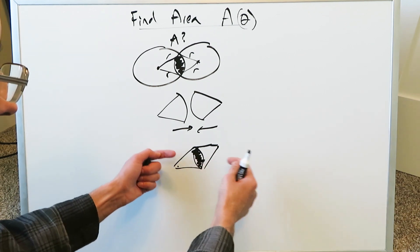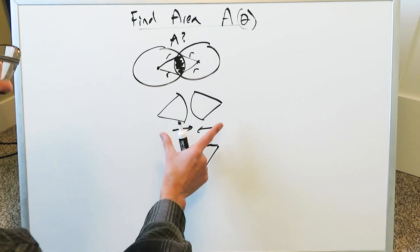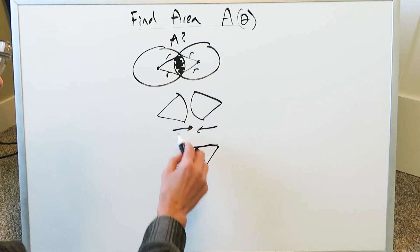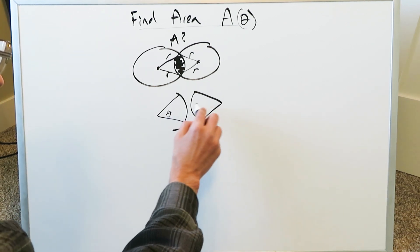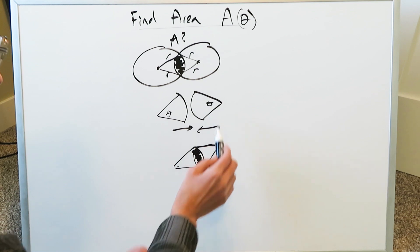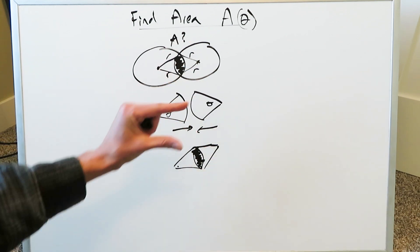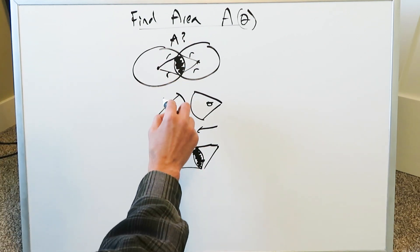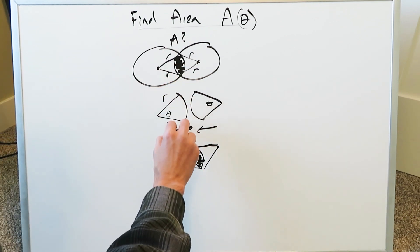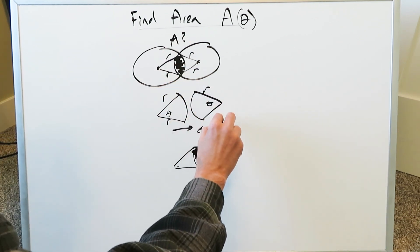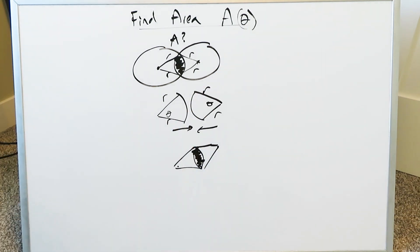And why is it with regards to theta? Because as the degree of overlap changes — increases or decreases — this variable theta will change. It will either become larger or smaller with the amount of overlap, but the radius will always stay the same. Hence, it's the area with regards to theta.